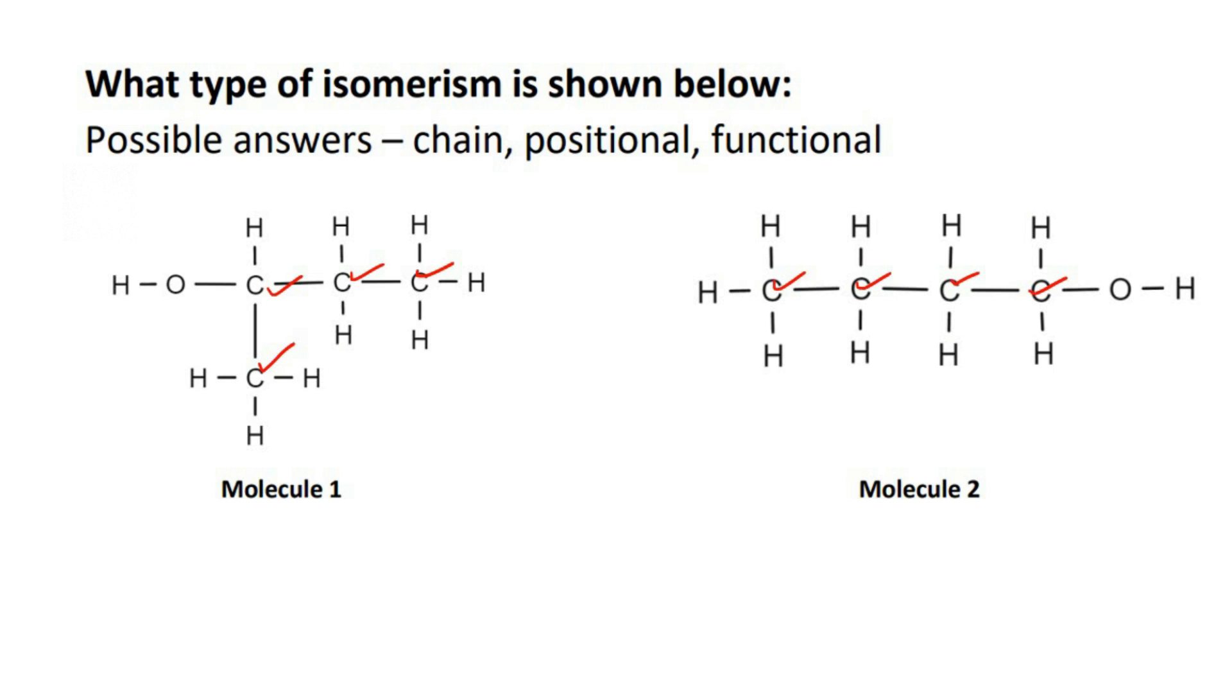If you look on the left there would be one, two, three, four, five, six, seven, eight, nine, ten hydrogens. On the right there's one, two, three, four, five, six, seven, eight, nine, ten. And then there's one oxygen and one oxygen.